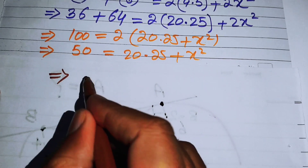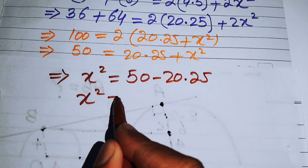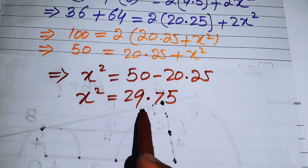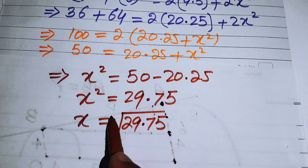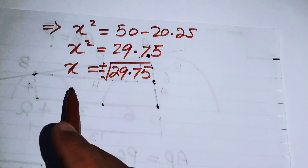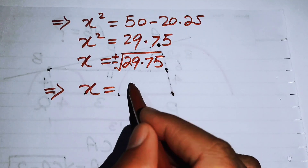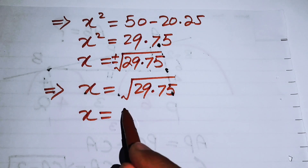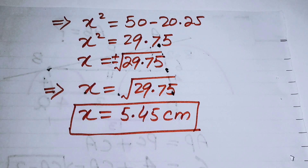Moving 20.25 to the left-hand side: x² = 50 − 20.25, so x² = 29.75. Taking the square root of both sides gives x = ±√29.75. Since x is the length of the median, it cannot be negative, so we take the positive value: x = √29.75 ≈ 5.45 centimeters. This is our final answer. Thank you for watching — please subscribe to my channel for more videos.